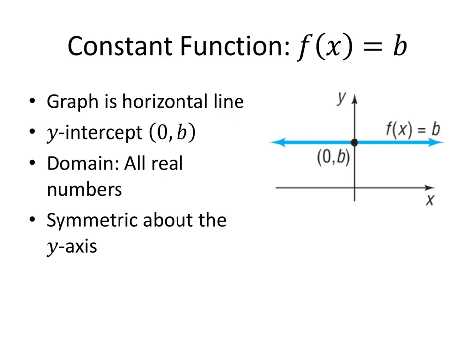All of these graphs are going to look like horizontal lines. The y-intercept is going to be at the point b, and in fact every point on this graph has y-coordinate b. The domain is all real numbers — there's nothing in the formula f of x equals b that would prevent us from plugging in any values of x. The graph is also symmetric about the y-axis; if we were to flip this picture over with the y-axis in the middle, the graph would look the same.